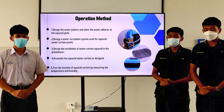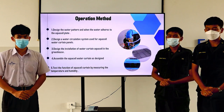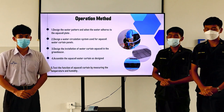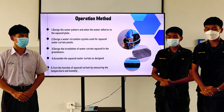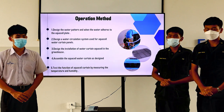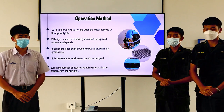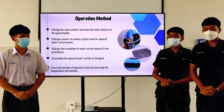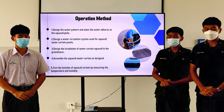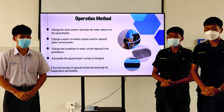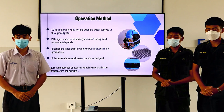Operation method: 1. Design the water pressure and how the water adheres to the aqua cell plate. 2. Design a water recirculator system for aqua cell water consumption channel. 3. Design the integration of the water function aqua cell in the greenhouse. 4. Assemble the aqua cell water function as designed. 5. Test the function of aqua cell by measuring the temperature and humidity.